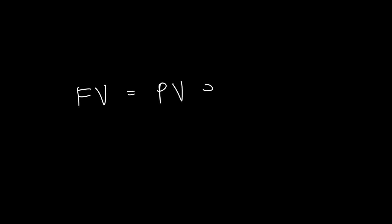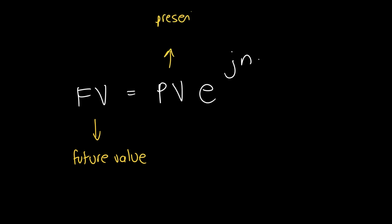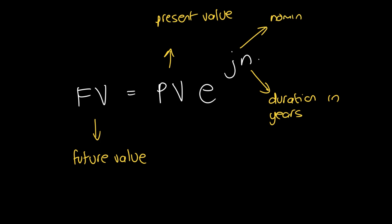The formula for continuous compounding is: future value equals present value times e to the jn, where FV is the future value, PV is the present value, n is your duration in years — so whenever you have continuous compounding, n is always in years — and j is your nominal interest rate. When you quote a percentage per annum compounded continuously, you put in this rate in decimal fraction notation, so 0.01 represents 1% per annum continuously compounded.